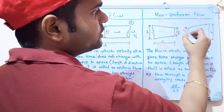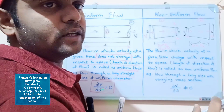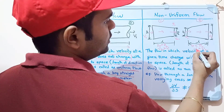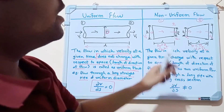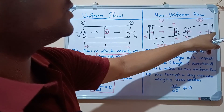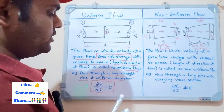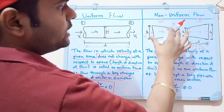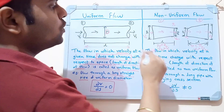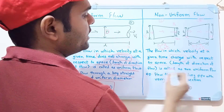Since this is the divergent portion, when the pipe diverges there is a reduction in velocity. So in this case v1 is greater than v2. The velocity at inlet at d1 is greater and the velocity at outlet at d2 is reduced. The flow in which velocity at a given time changes with respect to space in the direction of flow is called non-uniform flow.